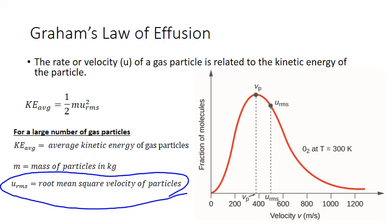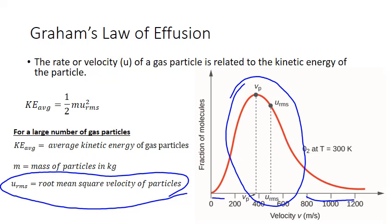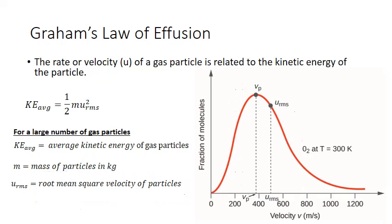If you look at a molecular speed distribution for a large number of particles, which is what this graph shows, not every particle is moving at the exact same speed. In any population, some particles are moving really quickly and some are moving really slowly. The majority — the greatest fraction — are moving at an intermediate speed somewhere in between, and that intermediate speed is ultimately determined by the temperature of the particles. Notice that this distribution is not exactly symmetrical; it has a slightly longer tail on the higher end. So the best average is actually the root mean square.